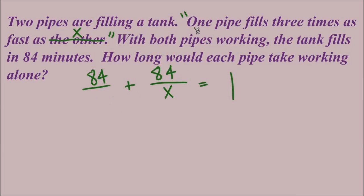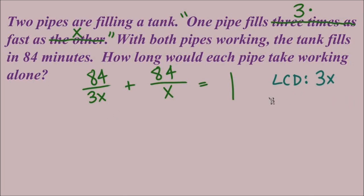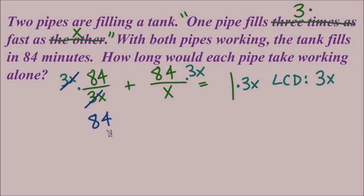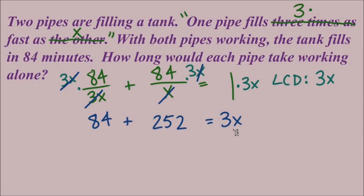We place x in one denominator. For the other denominator, we translate the sentence: one pipe fills three times as fast as the other, so three times x, or 3x. The LCD for denominators x and 3x is 3x. Multiplying 3x to each term and looking for canceling: in the first term, 3x cancels with 3x, leaving 84. In the second term, the x's cancel, but we multiply 84 by the coefficient 3 to get 252. On the right side, 1 times 3x equals 3x.